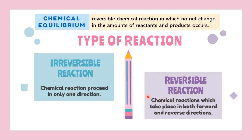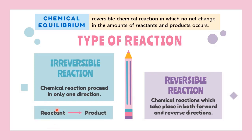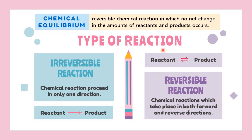What's the difference between these two? Irreversible means reactions cannot be reversed — they can only proceed in one direction, from reactant to become product. For reversible reactions, the products, as soon as they are formed, will react again to produce the original reactants. So reactions can happen both forward and reverse. These two types are differentiated by their arrow: irreversible reactions have a single-direction arrow, while reversible reactions have a double-direction arrow.